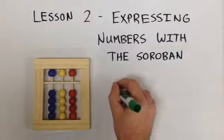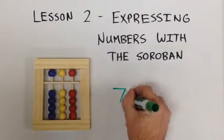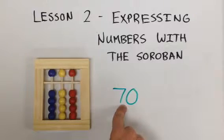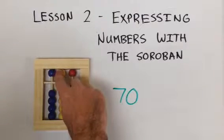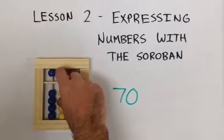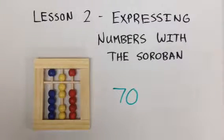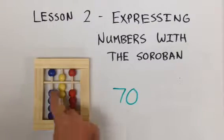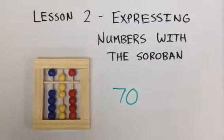Go ahead and express the number 70. We have seven 10s, so we take the upper yellow bead down to the answer line along with two lower beads together at once. We have 0 in our units. This shows us the number 70.